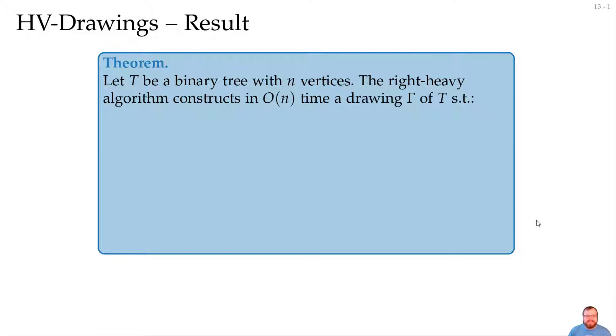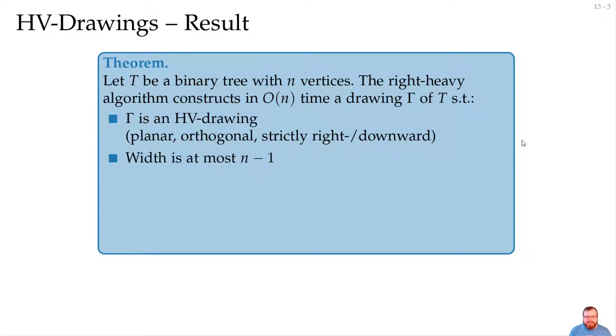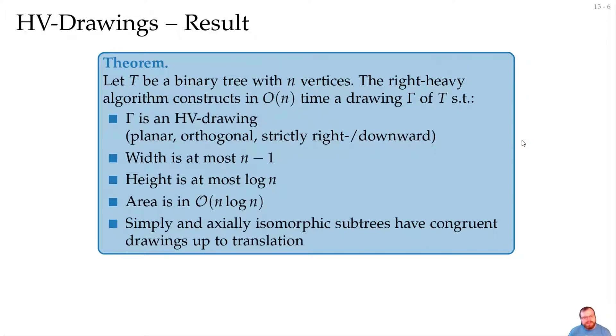Let's get to our results. We compute for a binary tree with n vertices in linear time a drawing, such that we get an HV drawing, so it's planar, orthogonal, that means only horizontal and vertical edges, and strictly right and downward. We have the width at most n minus 1. We have the height at most log n, thus the area is in order of n log n. And now the difference to before is we again have simply and axially isomorphic subtrees that have congruent drawings, but now it's only up to translation. Now they are not mirrored because we changed the embedding. It doesn't matter if they are simply or axially isomorphic. We changed the embedding for all of them to be the same anyway, so they are just up to translation congruent.